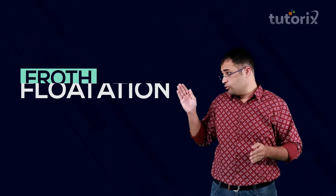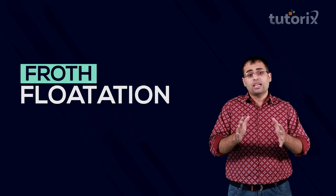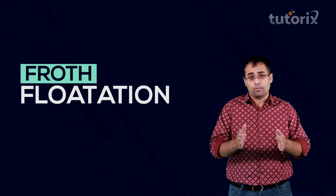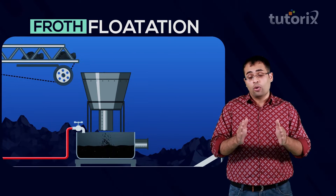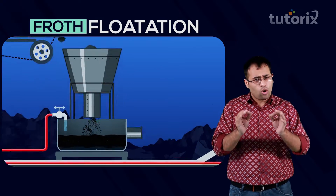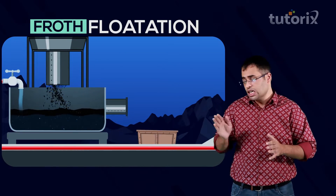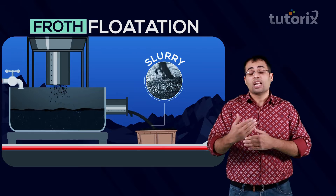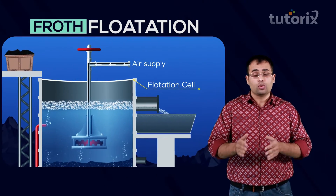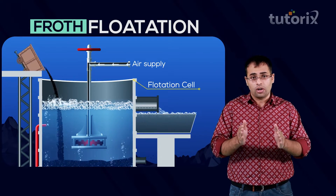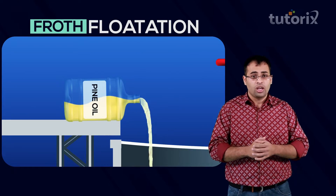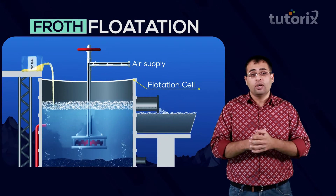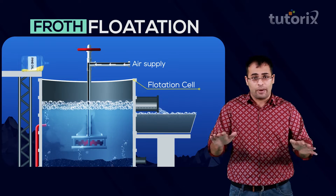Let us discuss the technical details of the froth flotation process. In the very first step, the ore is finely powdered or crushed. This finely powdered ore is then mixed with a small amount of water to form a slurry. This slurry of crushed ore is then introduced into a flotation cell containing water and a small amount of frothing agents like pine oil. Because the ore is insoluble in water, it forms a suspension.